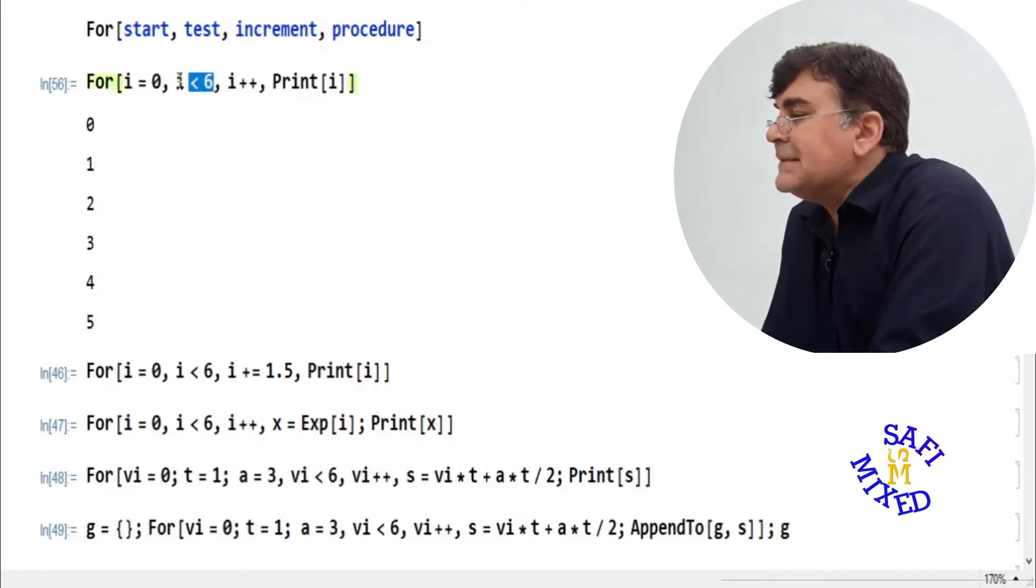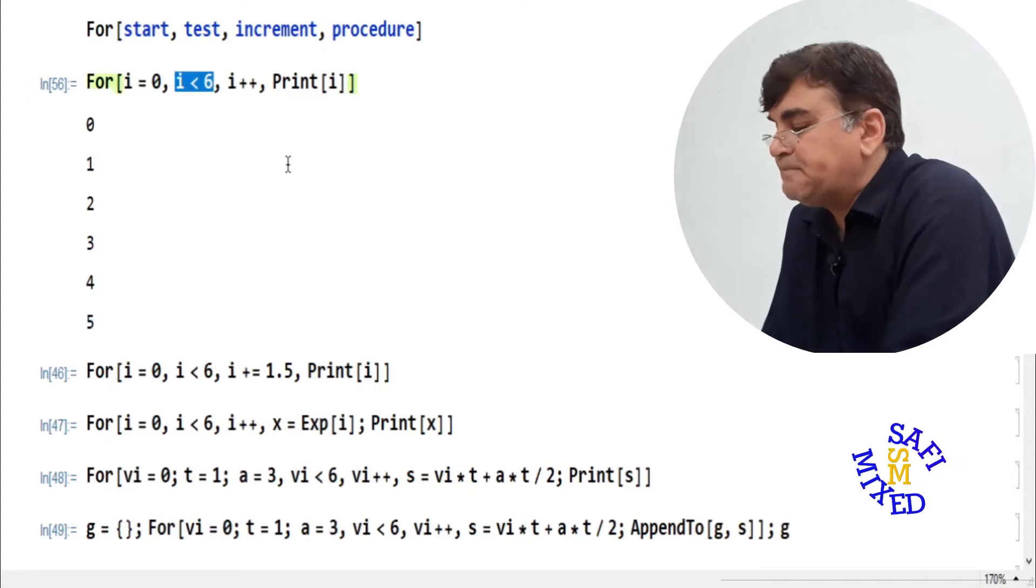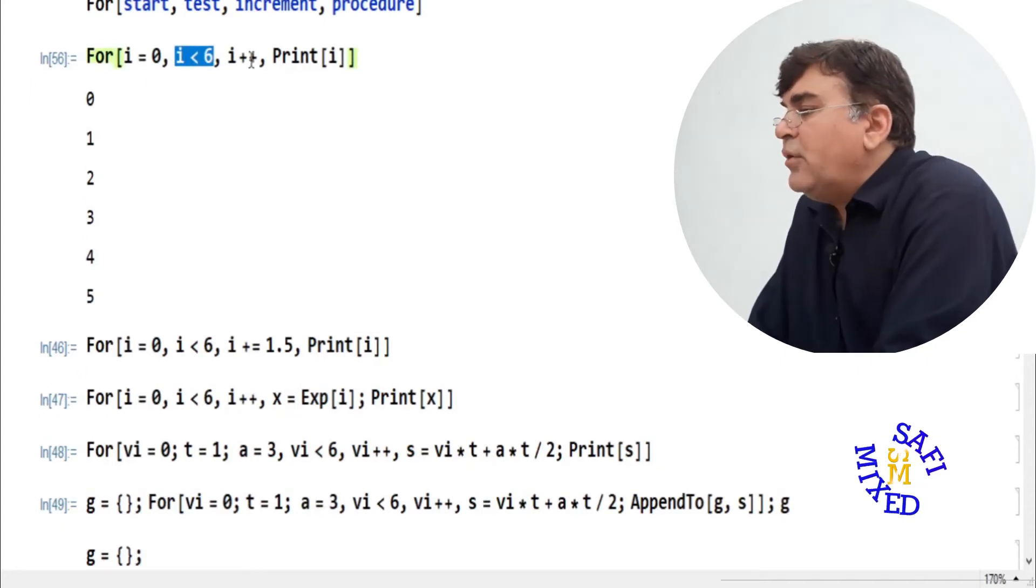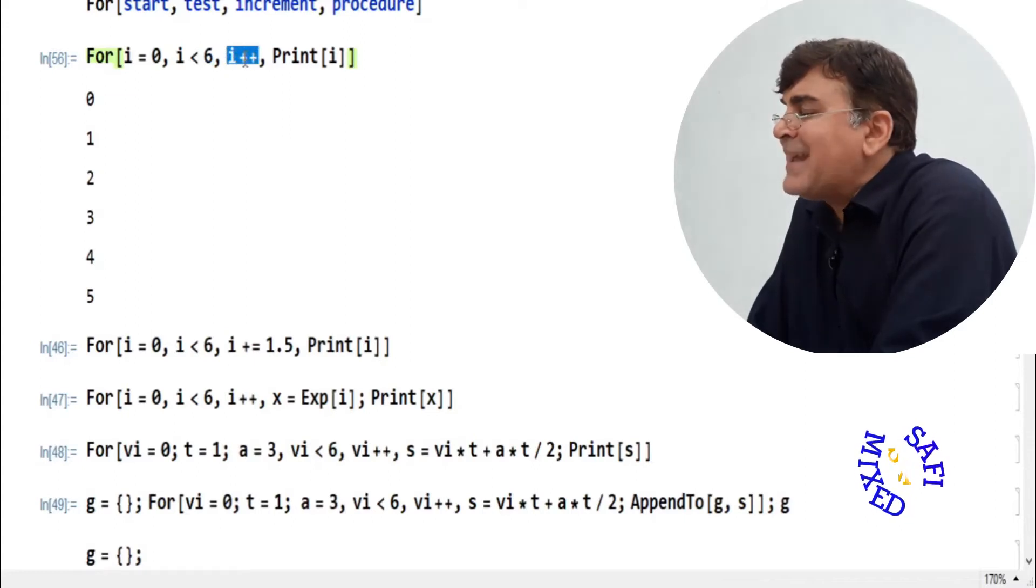If I run this loop, I get the values of the iterator. The maximum value in this case is 5, which is obviously less than 6.